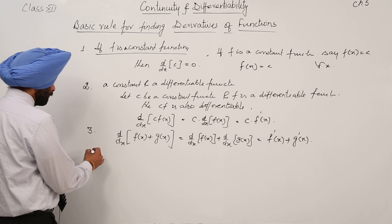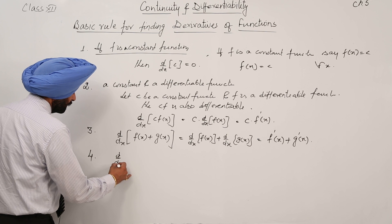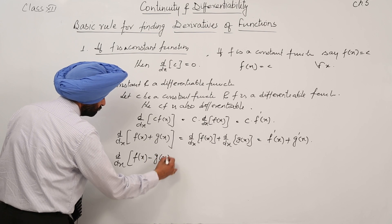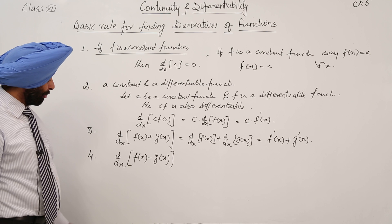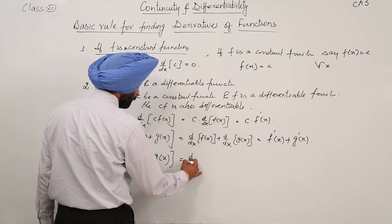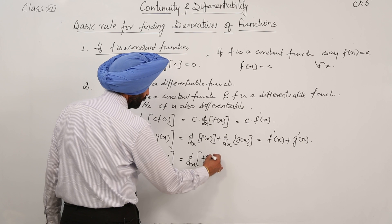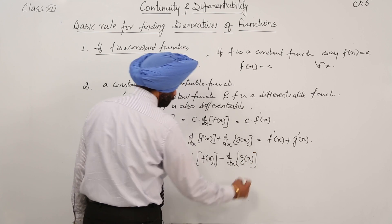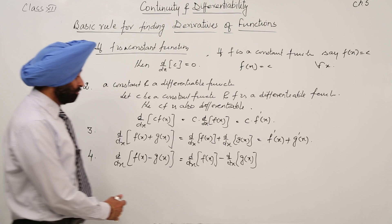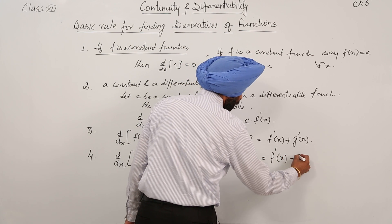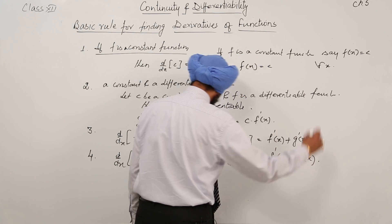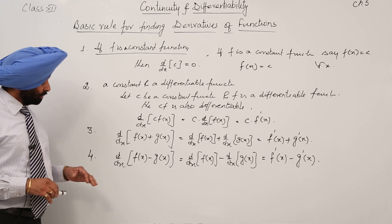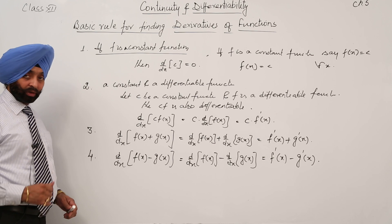Similarly, d by dx of f(x) minus g(x) equals d by dx of f(x) minus d by dx of g(x), which equals f'(x) minus g'(x). So we have gone through these simple rules from Class 11. Next, rule number five is the product rule.